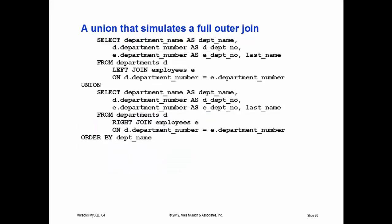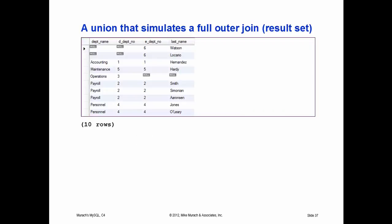You can do a union that simulates a full outer join. With a left join you're going to get things from the departments table whether or not there is a match in the employees table, and with the union on the bottom you're also going to get things from the employees table even if there's not a match in the departments table. You notice you get nulls in some of all four of the columns.